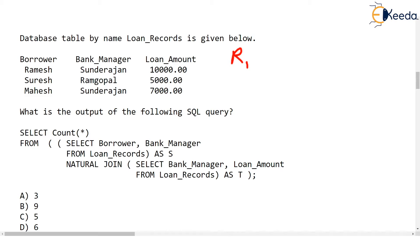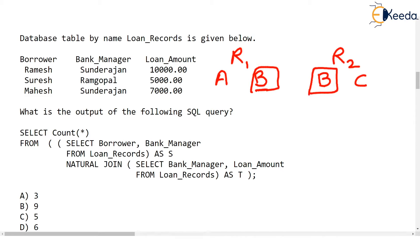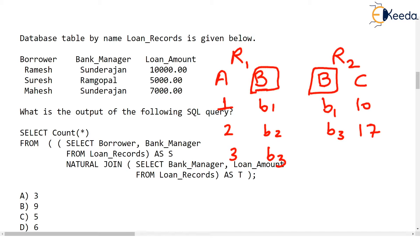As an example, consider two relations R1 and R2. R1 has columns A and B, and R2 has columns B and C. Column B in R1 and column B in R2 are common — they have the same name and same domain. Imagine R1 has entries 1B1, 2B2, and 3B3, and R2 has entries B1-10, B3-17, and B4-18.